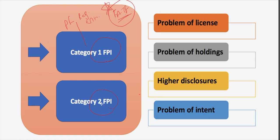In Category 2 FPI, it includes appropriately regulated funds who are not eligible as Category 1 FPI. It also includes endowments and foundations, charitable organizations, family offices, and individuals.